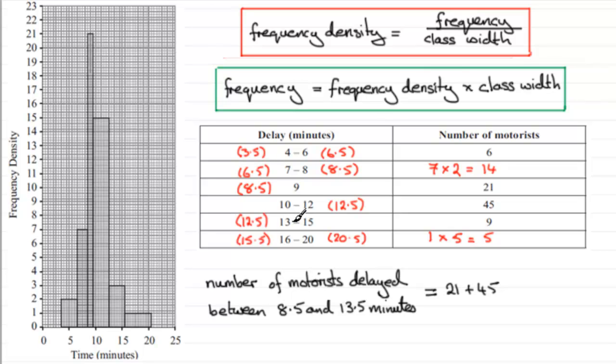But what would the frequency density be? Well, the frequency density in that interval 13 to 15, as you can see, is this one here. It goes up to 3. So what we've got to do is add 1 times 3.